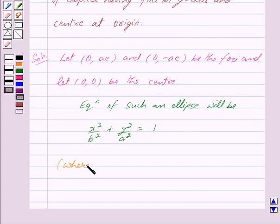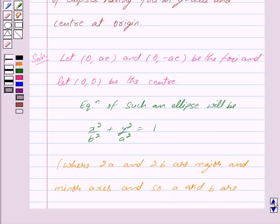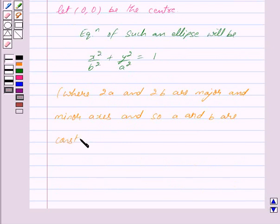Where 2a and 2b are major and minor axes and so a and b are constants. And let us mark this equation x² / b² + y² / a² = 1 as equation 1.